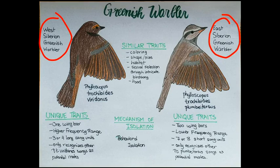Some similar traits on both subspecies include their coloring, shape, size, habitat — they live in the same area — their process of sexual selection through birdsong, and their predators and prey.